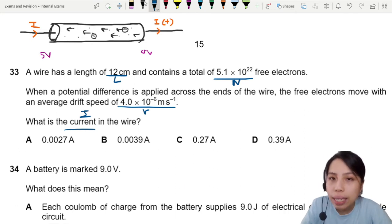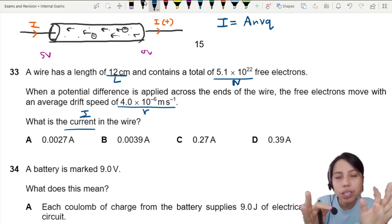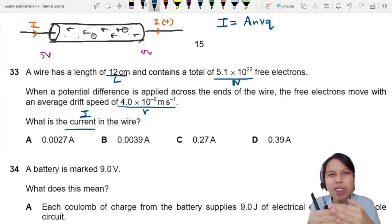Our good friend for current in the wire is I equals to A n v q. This is the equation given in the first page, the data formula sheet of every physics question.